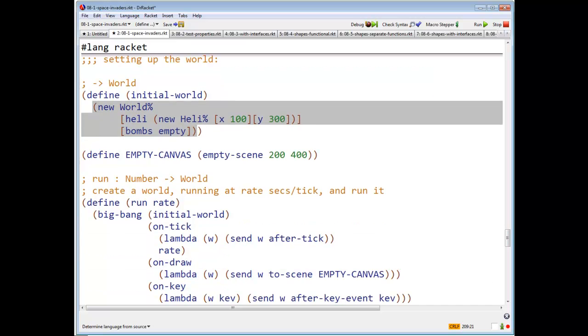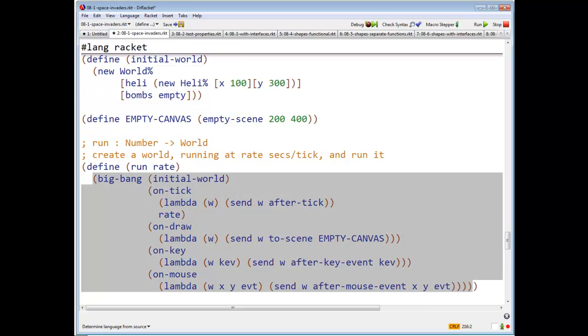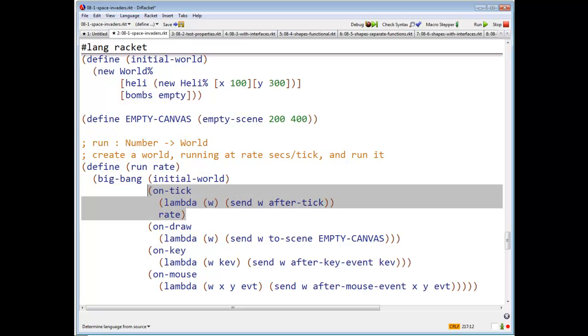We're almost done here, how are we going to make this go? To run the simulation, running at rate whatever, the rate which is seconds per tick, we call Big Bang. The initial world is the initial world that I'm creating. On tick, I will send that world an after tick message. And remember, on tick takes a second parameter, which is your rate in seconds per frame.